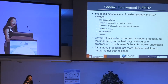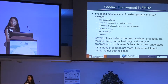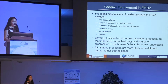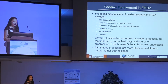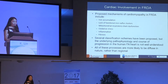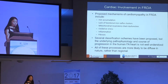All of the processes described are more likely to be diffuse in nature rather than regional. Where some disease processes affect the heart in certain segments, the process underlying the cardiomyopathy in FA is likely a diffuse process, so it would be nice to have measures which reflect that diffuse disease.